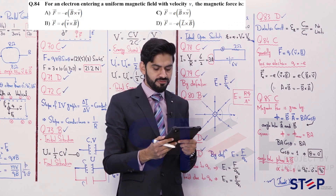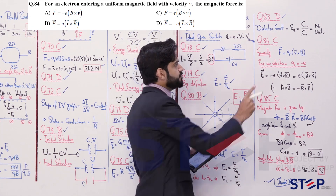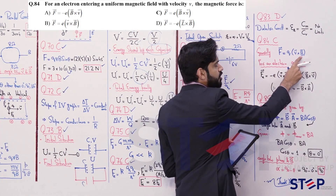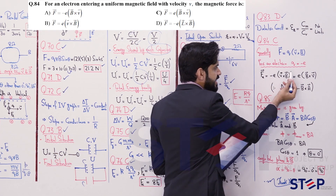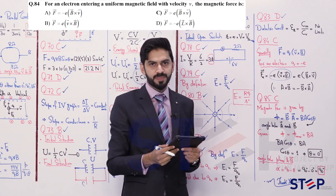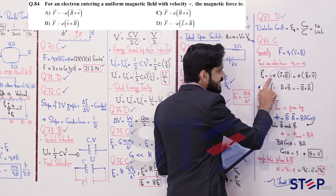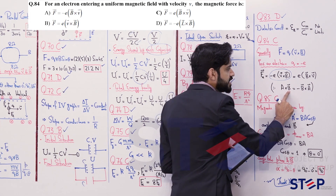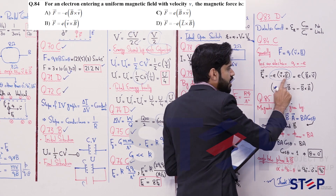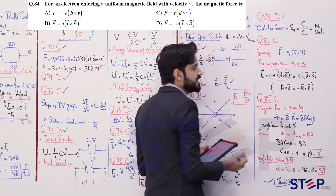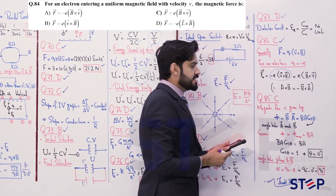Question 84: Magnetic force on an electron entering a uniform magnetic field with velocity v. General expression: F = qv×B. For an electron, q = -e, so F = -e(v×B). Using the property a×b = -(b×a), this becomes F = e(B×v). This expression matches option C. Question 84's answer is option C.